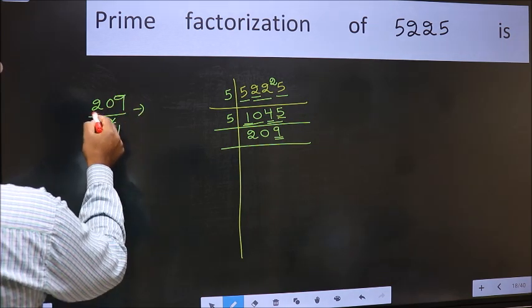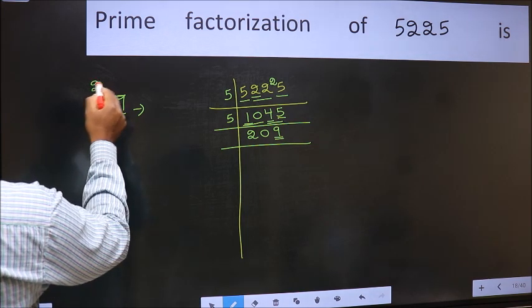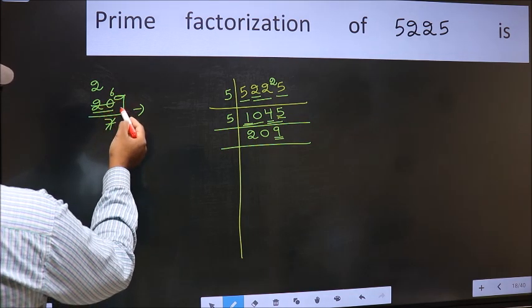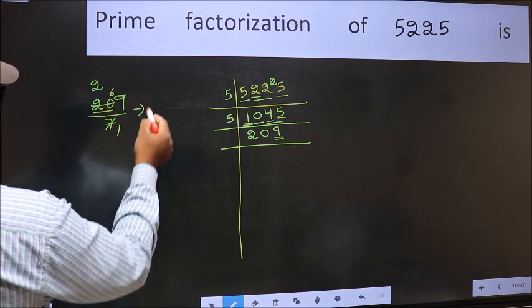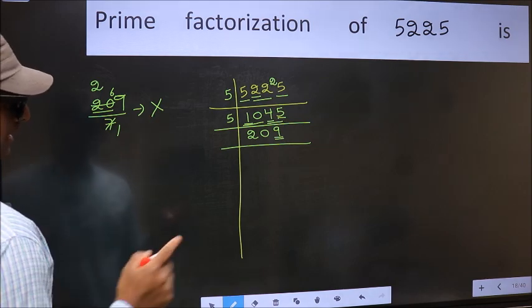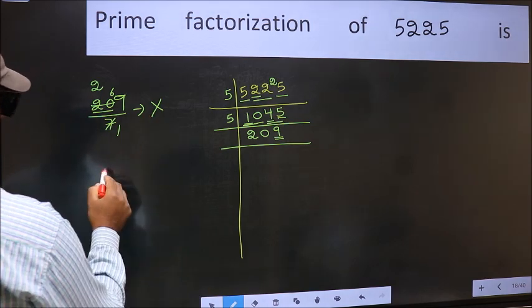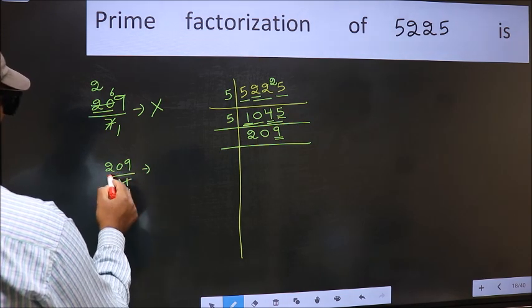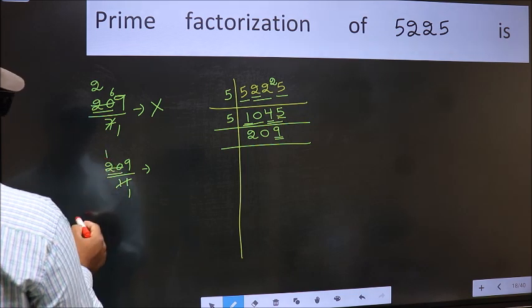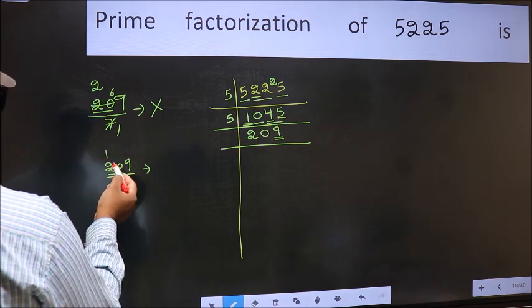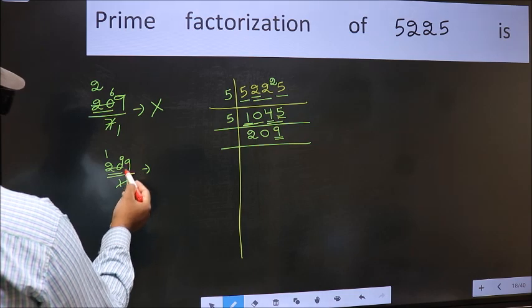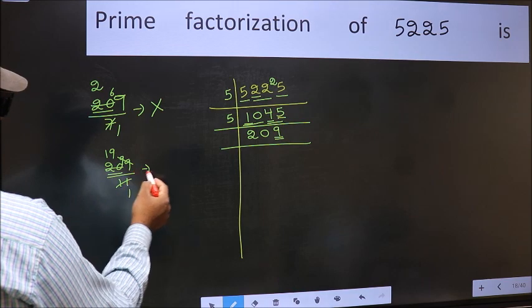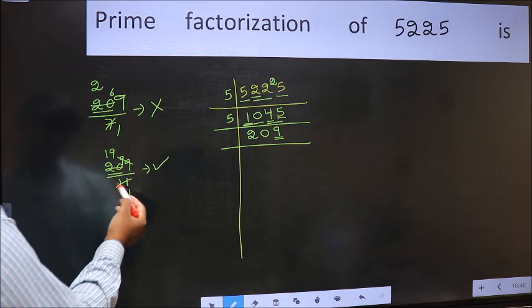Our number close to 20 in 7 table is 7 twos 14. 20 minus 14 is 6, 6 carried forward gives 69. We don't get 69 in 7 table, so this is not divisible by 7. Next prime number 11. A number close to 20 in 11 table is 11 once 11. 20 minus 11 is 9, 9 carried forward gives 99. When do we get 99 in 11 table? 11 nines 99. No number has been left out, so this is divisible by 11.